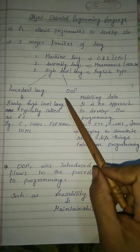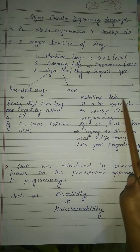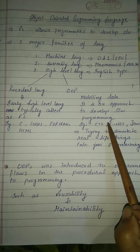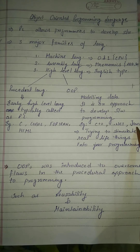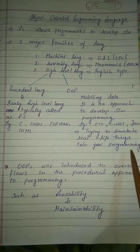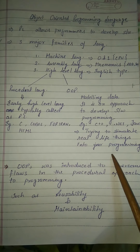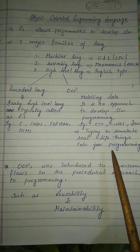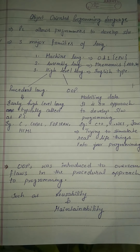In object-oriented programming, it depends on modeling of data. It is an approach to develop software programming. For example, C++, .NET, and Java — trying to simulate real-life things into your programming. Object-oriented language means everything is focused on real-life objects that we use in real life.